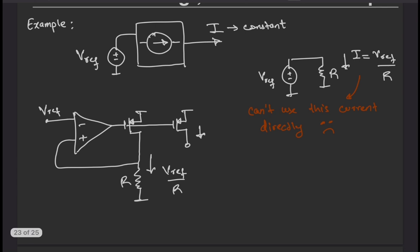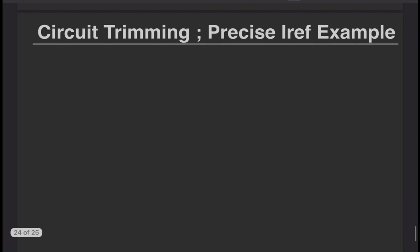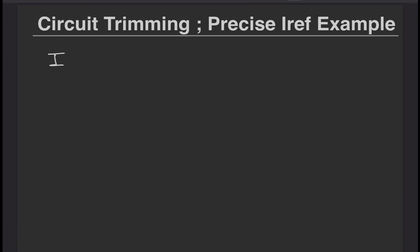In the following circuit, we get a current of Vref by R which can be mirrored to other branches. The problem here is that R varies with process and so does the current.